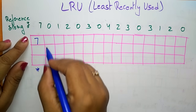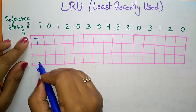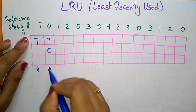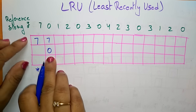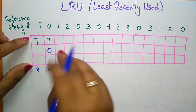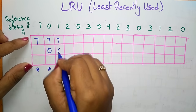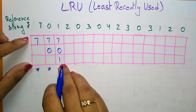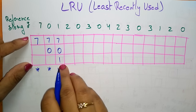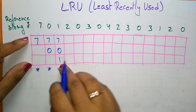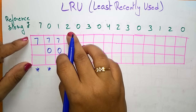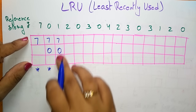Next I have to place 0. The other two frames are still free, so just place 0 — this is also a page fault because 0 is not present in the RAM. Next I have to place 1 — this is also a page fault because 1 is not present in the RAM. Now the CPU is demanding page 2, but 2 is not present in the RAM either.